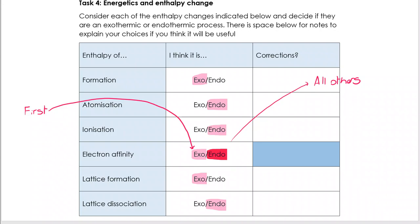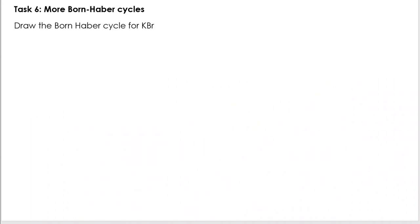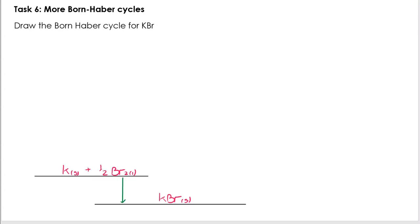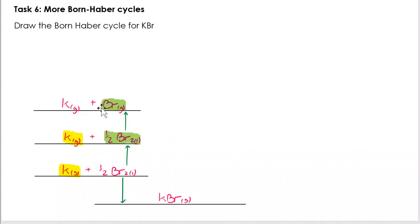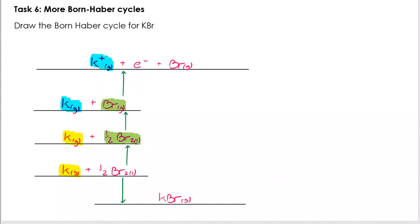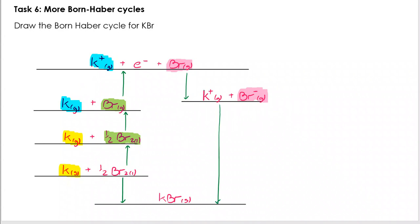Here are a few more examples of Born-Haber cycles to draw. The KBr cycle is very similar to NaCl. Starting with the enthalpy of formation: K solid plus half Br₂ goes to KBr solid, formation going down. Then atomise potassium — K solid to K gaseous — then atomise bromine: half Br₂ becomes Br gaseous. First ionisation enthalpy: K goes to K⁺ — don't forget to include the electron. Then electron affinity: Br becomes Br⁻, gaining the electron. Now with gaseous positive and negative ions, we apply the lattice formation enthalpy.